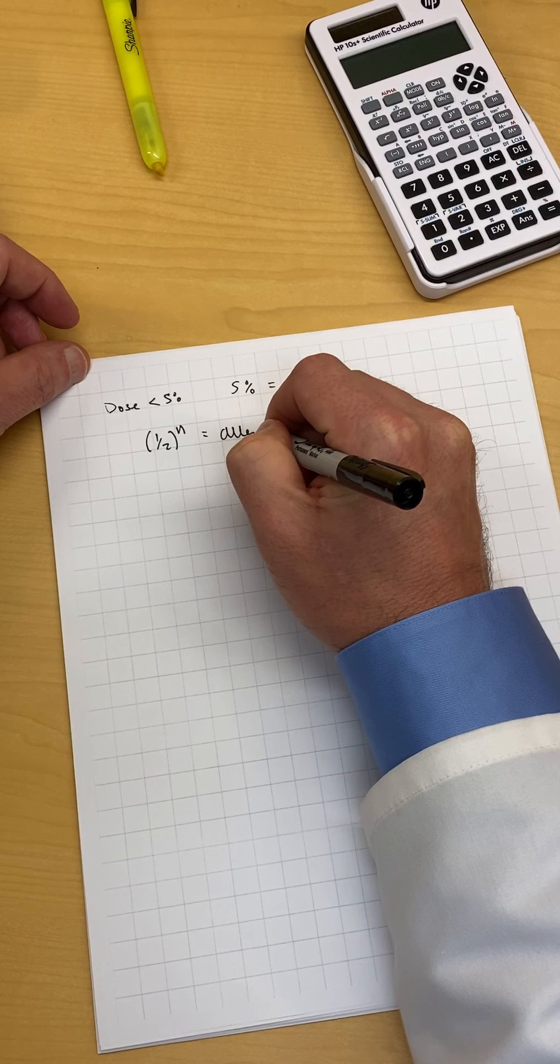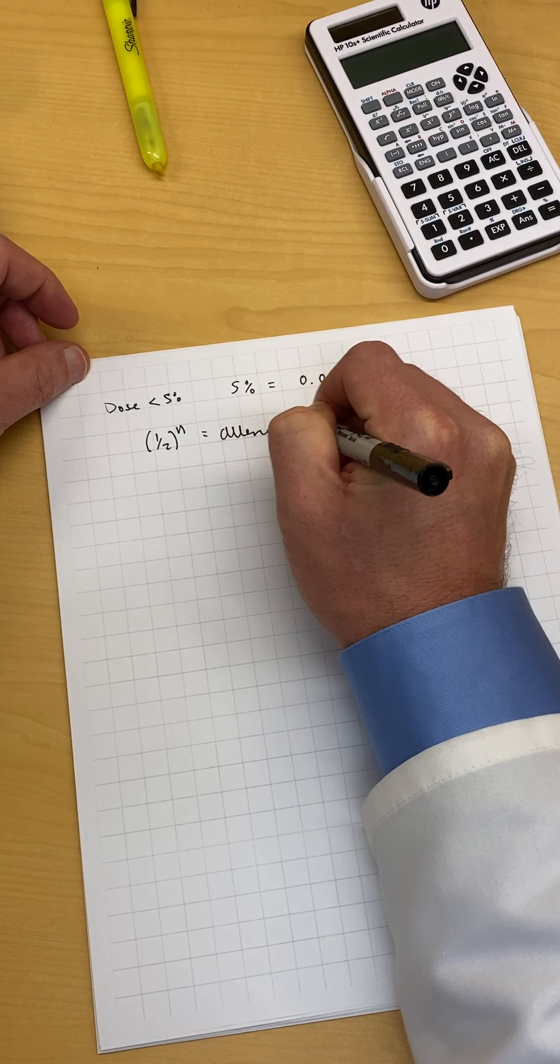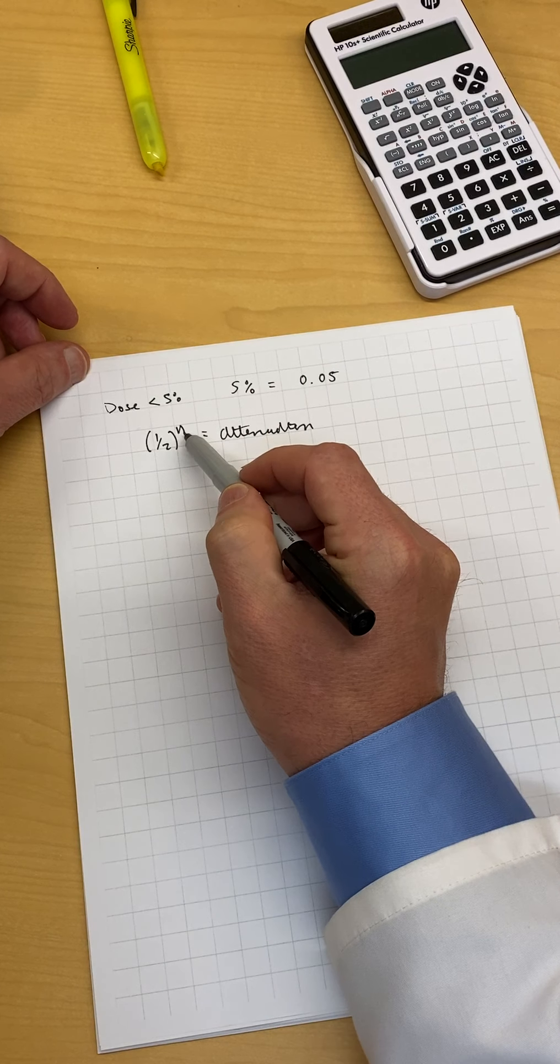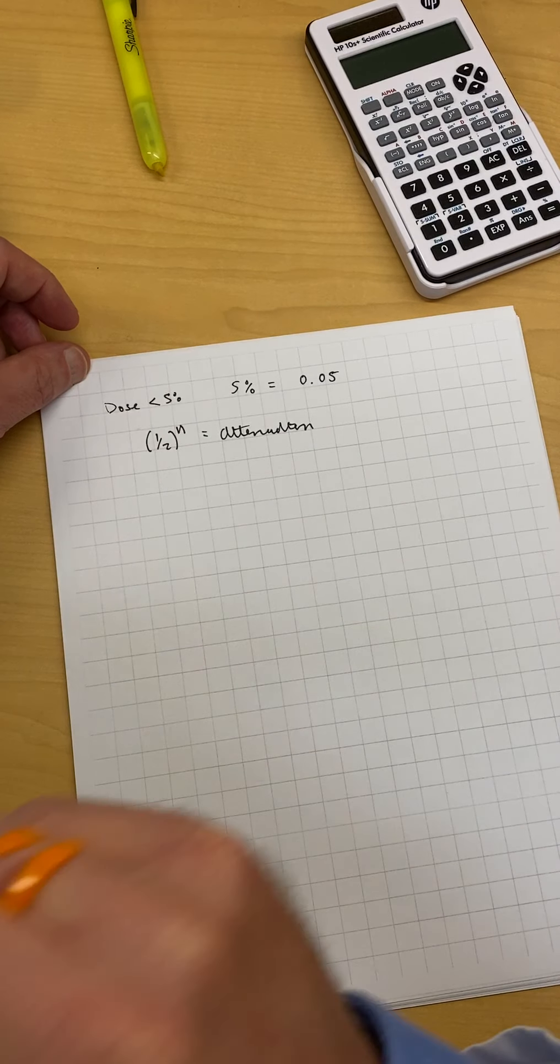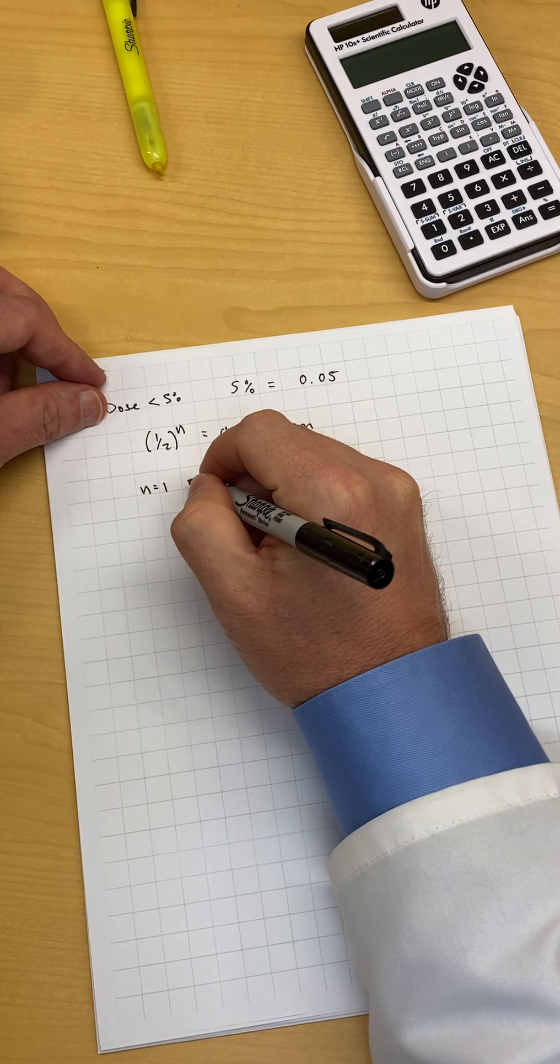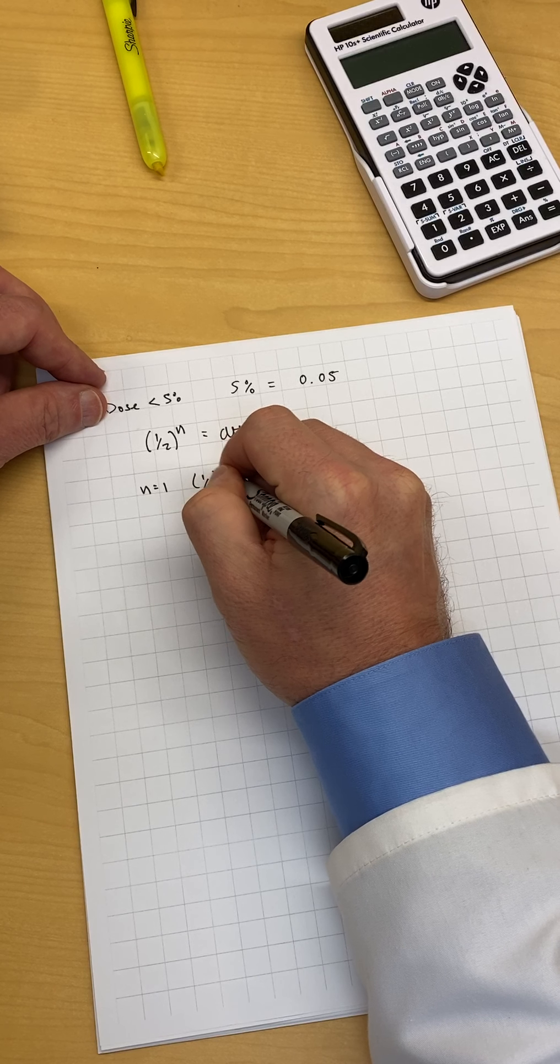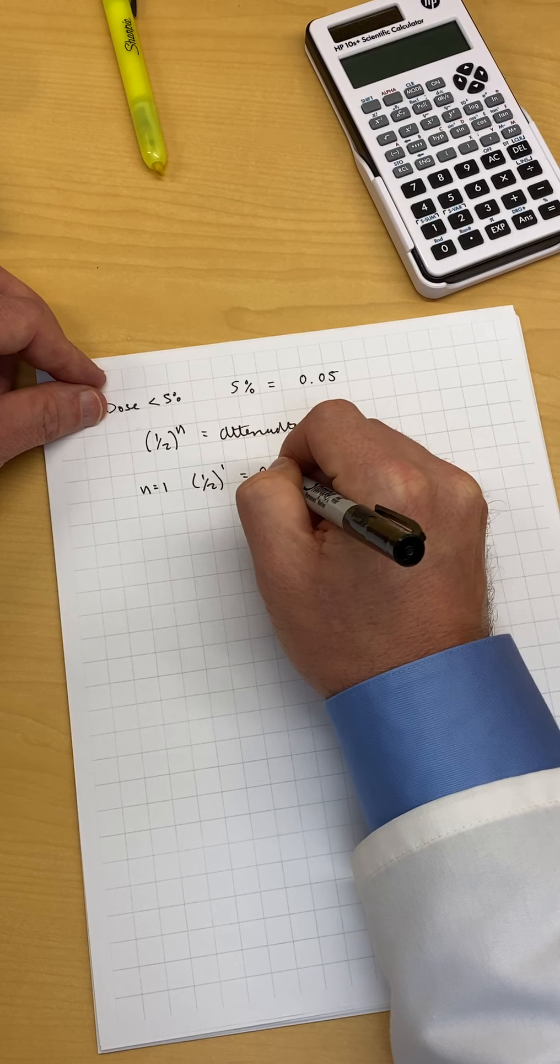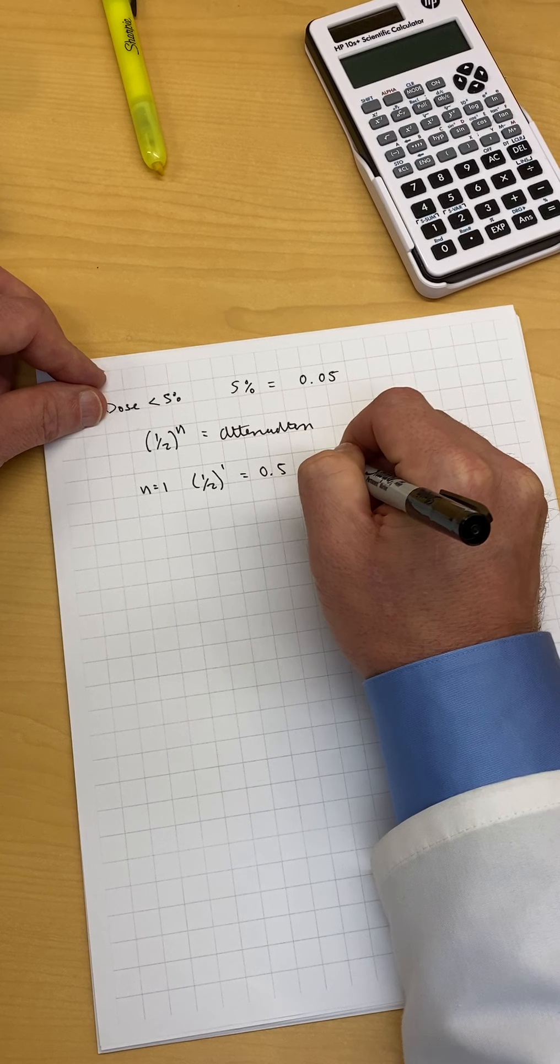When we're using half value layer, n would be the number of half value layers that we're going to use. So the easy way to do this: n equals one, so we get one half to the one half value layer equals 0.5. That's greater than 0.05, so we're going to keep going.